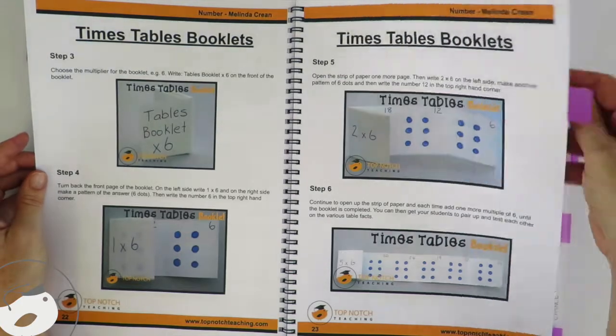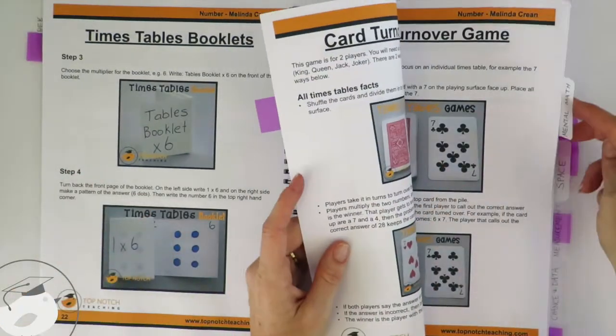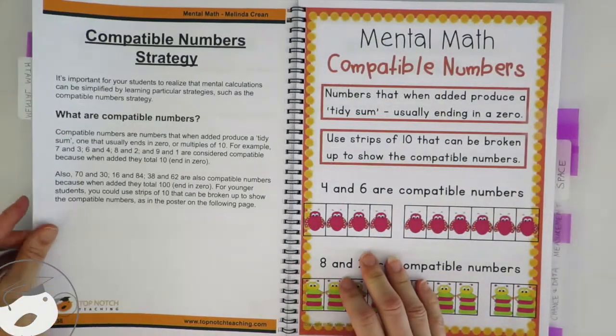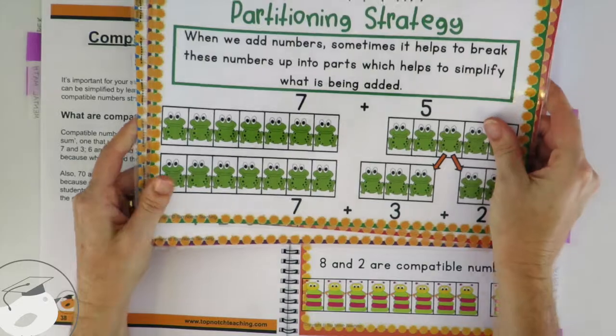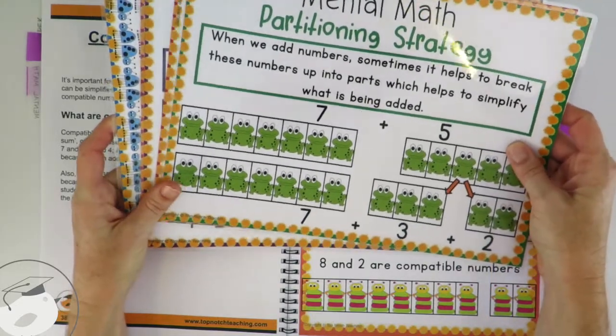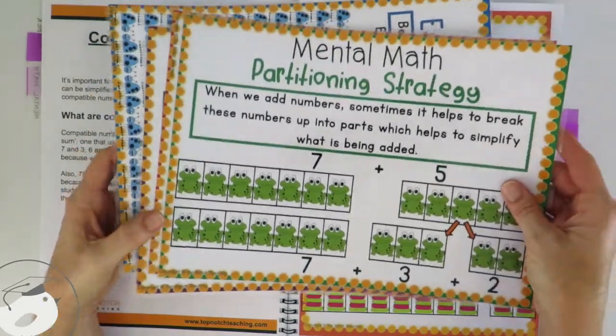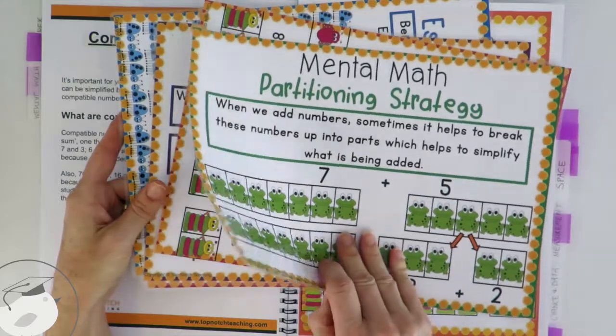The next section we've got is mental math, and I just wanted to show you some of the posters. There's five different mental math skills that are looked at in the book.